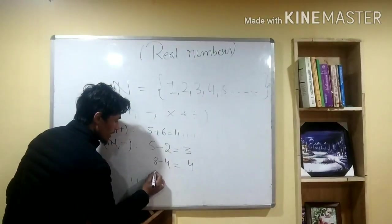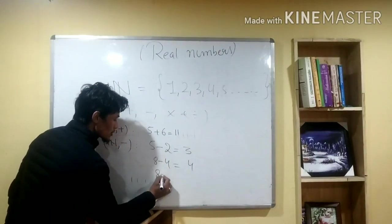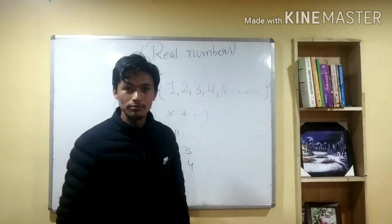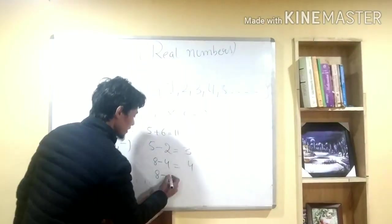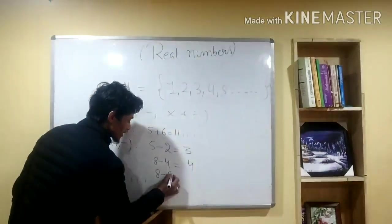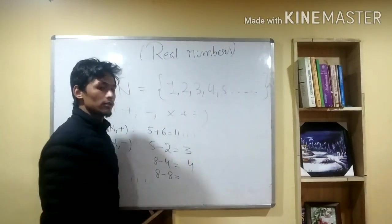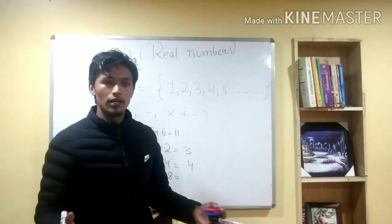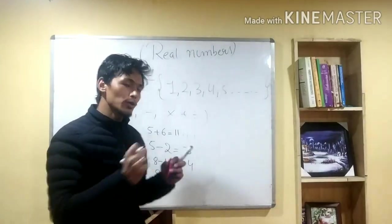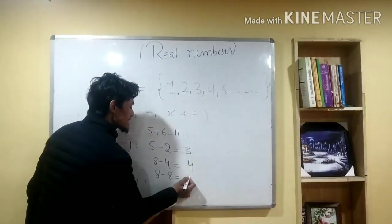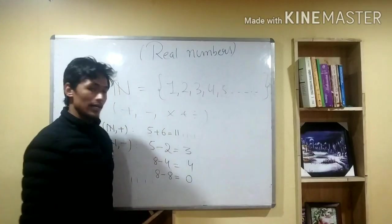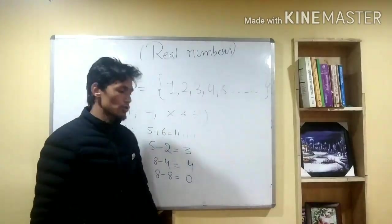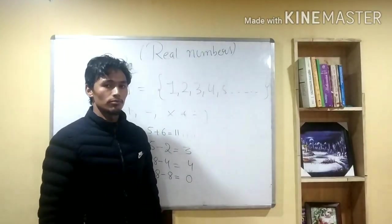Suppose that you will put 8 roti in your mouth. If you put 8 roti in your mouth and then take away 4, your mouth will be left with some. With nothing remaining, we call it 0.